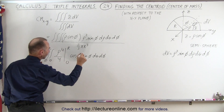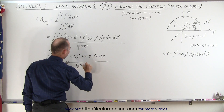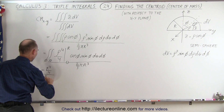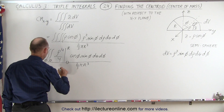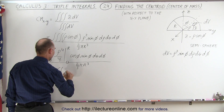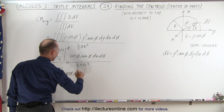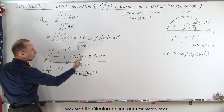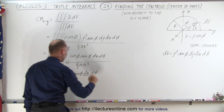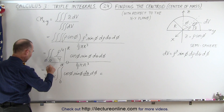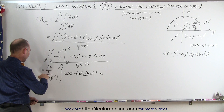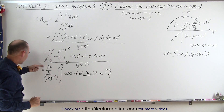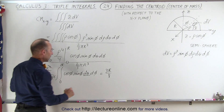Don't forget the whole thing is divided by two-thirds pi r cubed. So we end up with r to the fourth over four divided by two-thirds pi r cubed, times the double integral of cosine of phi times sine of phi, d theta d phi. Simplifying — the r cubed and r to the fourth give us r, the three goes to the top, and two times four becomes eight — so we have three r over eight pi.